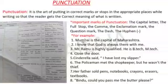See the first and second examples. Mumbai is the capital of Maharashtra — we are starting with the capital letter first, and Mumbai and Maharashtra are proper nouns. I know that God is always there with me. Here, I — the personal pronoun — is written with a capital letter, and God begins with a capital G. Hope this is clear.